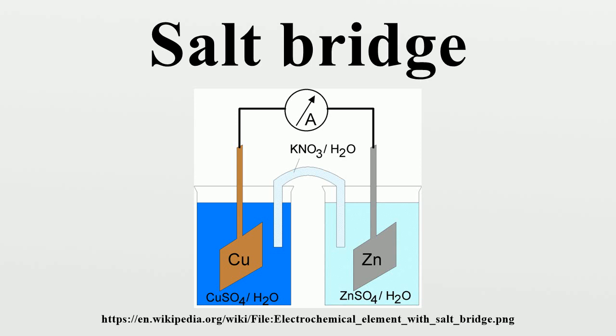and eventually prevent further net flow of electrons. A salt bridge allows the flow of ions to maintain a balance in charge between the oxidation and reduction vessels while keeping the contents of each separate.